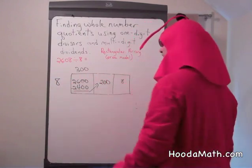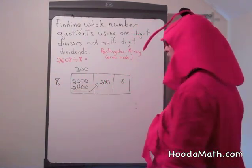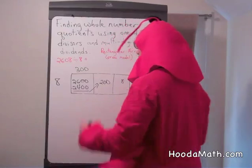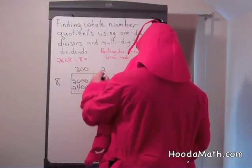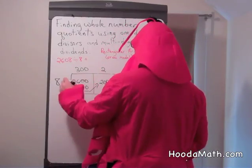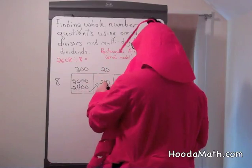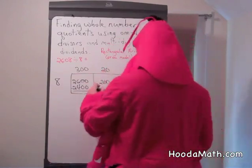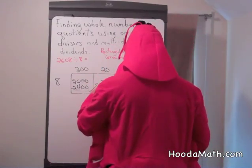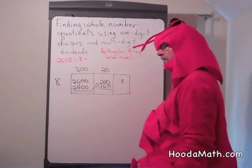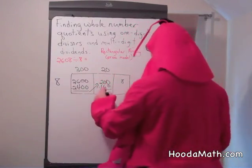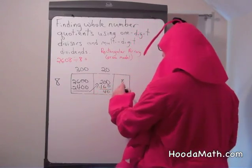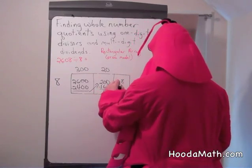How many times does 8 go into 200? Well, 8 goes into 20 about twice, and so we have to add a 0 to go 8 into 200. 8 times 20 is 160. What do we have left over? 40. We add the 40 plus 8 and we get 48.